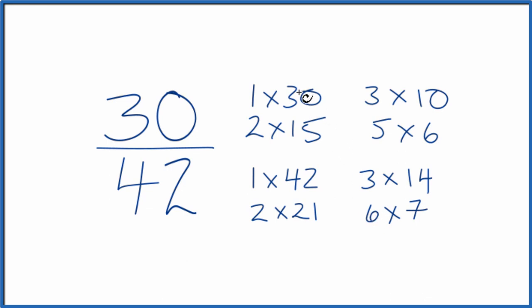We're looking for the greatest common factor. It looks like the greatest common factor is 6. So we divide 30 by 6, 42 by 6, and we'll have simplified 30 over 42.